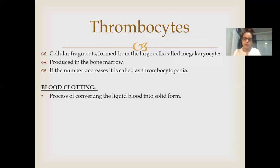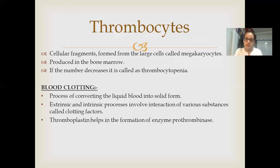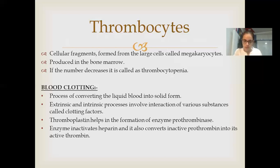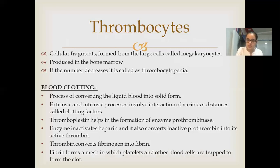Blood clotting is the process of converting liquid blood into solid form. Extrinsic and intrinsic processes involve interaction of various substances called clotting factors. Thromboplastin helps in the formation of the enzyme prothrombinase, which inactivates heparin and converts inactive prothrombin into active thrombin. Thrombin then converts fibrinogen into fibrin. Fibrin forms a mesh in which platelets and other blood cells are trapped to form the clot.